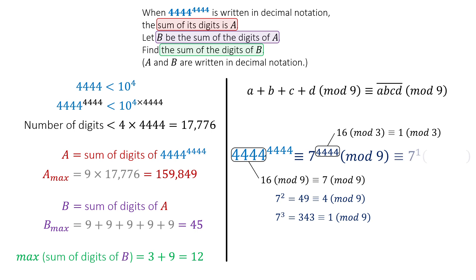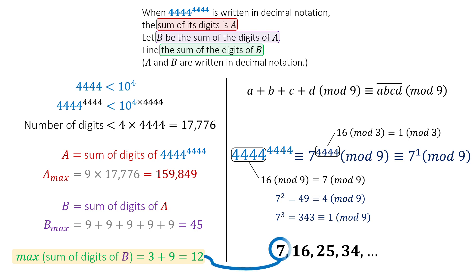Now we are left with 7 to the 1, mod 9. This means we need to consider numbers whose digit sum is 7, such as 7, 16, 25, 34, and so on. But we have proved that the maximum value of the sum of digits of B is 12. So the only candidate is 7. The giant has been tamed. The sum of the digits of B, for 4,444 raised to the power of 4,444, is, against all odds, a simple 7.